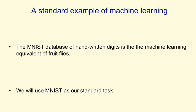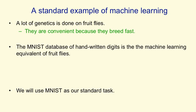In this course, I'm going to use a standard example for explaining a lot of the machine learning algorithms. This is done in a lot of science. In genetics, for example, a lot of work is done on fruit flies because they're convenient — they breed fast and a lot is already known about their genetics. The MNIST database of handwritten digits is the machine learning equivalent of fruit flies.